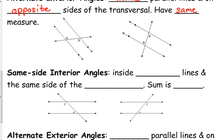Same-side interior angles are inside the parallel lines and on the same side of the transversal — for example, angles 2 and C, and angles 1 and D on your blue paper. Slide the wax paper and you'll see they form a linear pair, so their sum is 180 degrees.